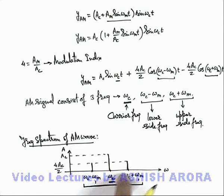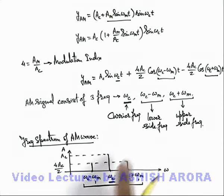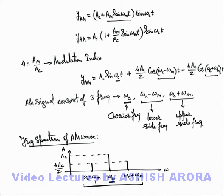So the whole signal containing the baseband signal over the carrier wave can be transmitted and received with sufficient power. Since we are changing the amplitude of the carrier wave according to the baseband signal, that is why it is called amplitude modulation.